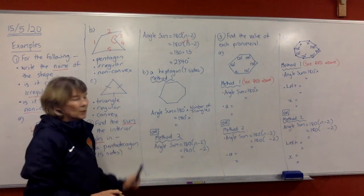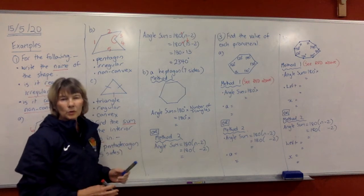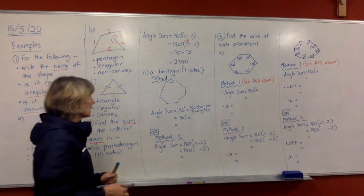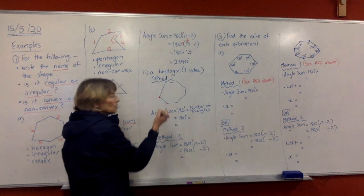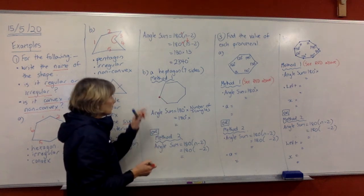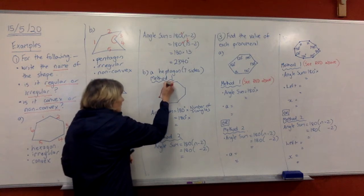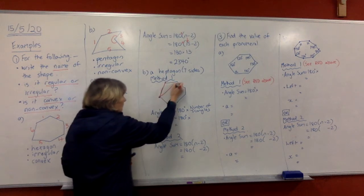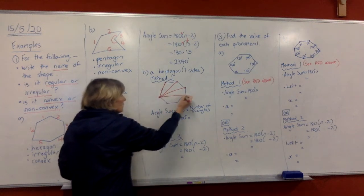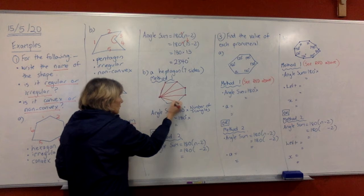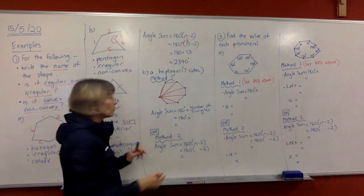So the next question is a heptagon, that's 7 sides. So method 1 I'm going to do for this one because I could draw a 7-sided shape fairly easily. So I'm going to show you how method 1 works. We start at any vertex, do it with your red pen, and join from that to every other vertex like this. That's 1, join into the second one, to the third, to the fourth, to the fifth, and to the sixth.